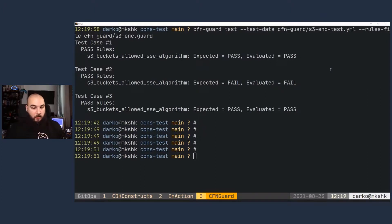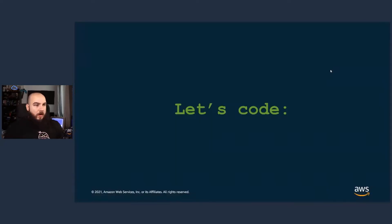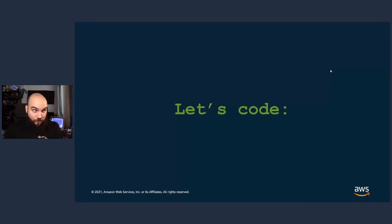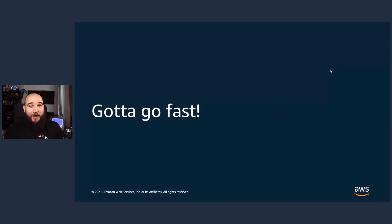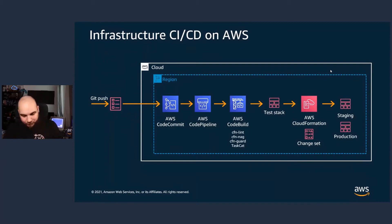We've seen an example of testing your code with CFN Guard — a wonderful way of testing the actual produced template. But do you use it just in your command line? Yeah, you can absolutely use it to verify things, but you usually use it somewhere else because you gotta go fast. And when we say gotta go fast, we talk about pipelines. This is where GitOps actually works with CDK or CloudFormation or your infrastructure code.